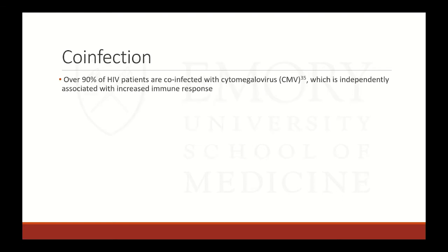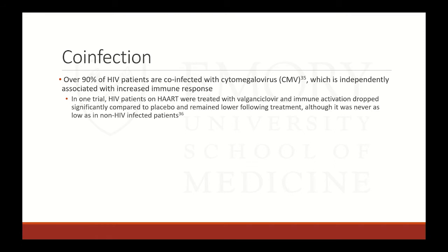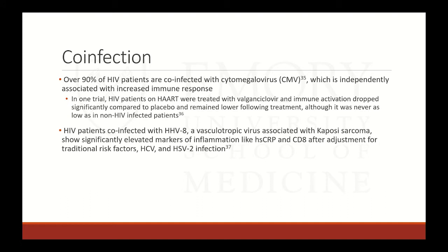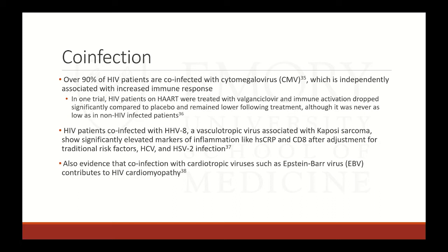In these patients, you have disrupted tight junctions due to increased endothelial cell apoptosis, loss of mucosal immunity, and presence of HIV in the gut itself despite HAART. In vitro studies show that elevated lipopolysaccharide — a marker of bacteremia — induces tissue factor expression in monocytes, causing CD8 activation, increased D-dimer levels, and elevated thrombosis risk. As for co-infections, over 90% of HIV patients are co-infected with CMV, independently associated with increased immune response. One trial showed that HIV patients on HAART treated with valganciclovir had significantly decreased immune activation. Patients co-infected with HHV-8 showed significantly elevated CRP and CD8 markers. There's also evidence that co-infection with cardiotropic viruses like Epstein-Barr can contribute to HIV cardiomyopathy.